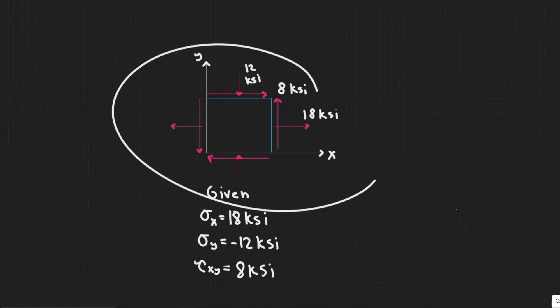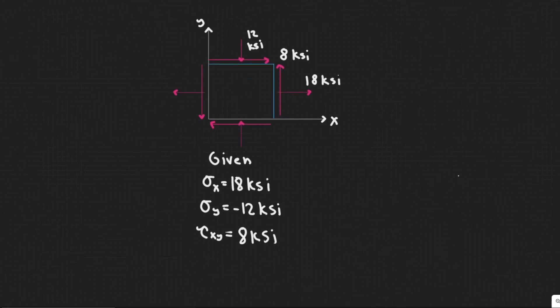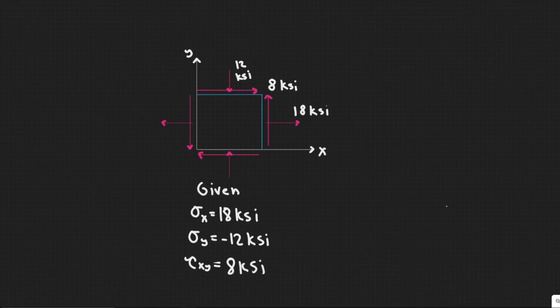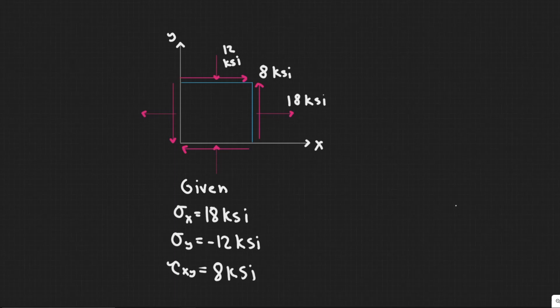We're given this figure here, and the first thing we always want to do is find our sigma x, sigma y, and tau xy, and we do that based on the figure here. So the first thing we've got to recognize is how to find sigma x. The value is 18. You find it by looking at these arrows right here. The corresponding value is 18, and since they're pointing outwards, the value is positive. Then we look at the parallel to the y, so our sigma y. It's these two arrows. They're pointing in, so our value is negative, and the value is 12, so minus 12 ksi.